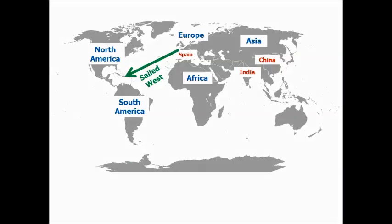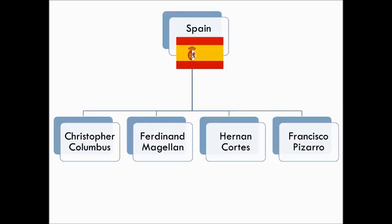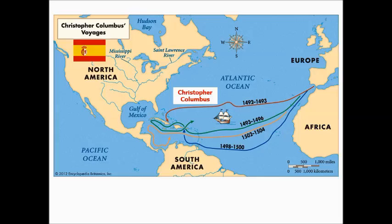The next group is Spain. Spain decides to sail west because they know the Portuguese control the all-water route around Africa. We're going to look at four Spanish explorers: Christopher Columbus, Ferdinand Magellan, Hernán Cortés, and Francisco Pizarro. Christopher Columbus, actually an Italian who sailed for the Spanish flag, sails west from Spain and lands in the West Indies — he was trying to find the all-water route and ended up discovering the West Indies.